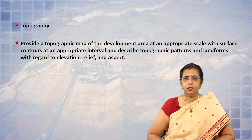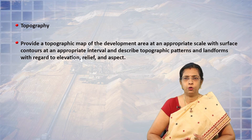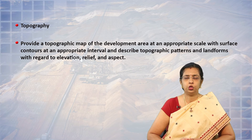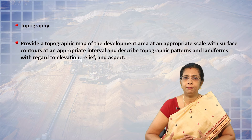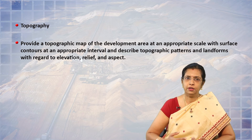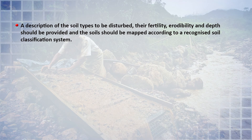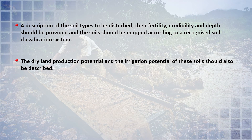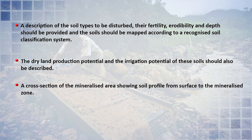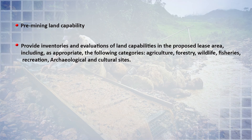Topographic maps of the development area at an appropriate scale with surface contours should be described, including topographic patterns and landforms regarding elevation and relief. Soil type, soil profile, fertility aspects, erodibility, and depth should be provided and mapped according to a standard soil classification system. The dryland production potential and irrigation potential of soils should be described. A cross-section of the mineralized area showing the soil profile from the surface to the mineralized zone also needs to be done.